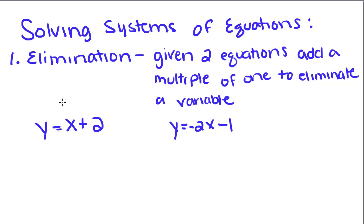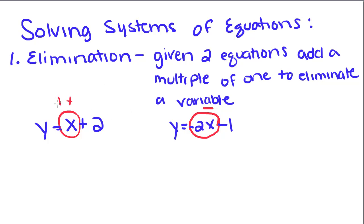You want to look at the x coefficients — x in this equation is positive and this 2x is negative. If you add a positive and a negative together, they're going to cancel each other out. So we want to take the x with the smaller coefficient, which is this one, because it only has a coefficient of one, and multiply it by something that will allow it to cancel with the negative 2x.